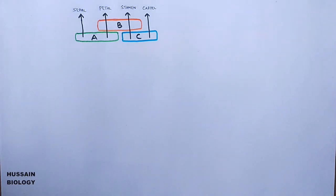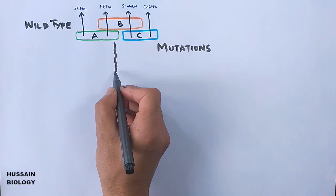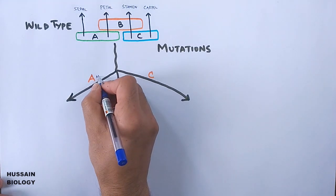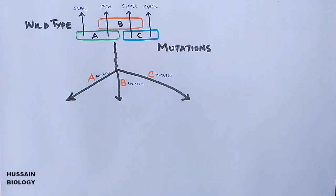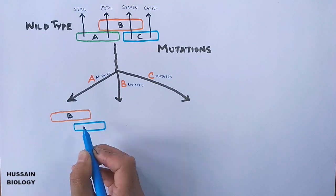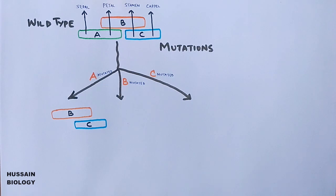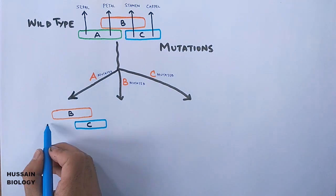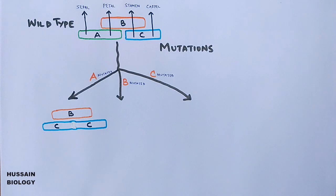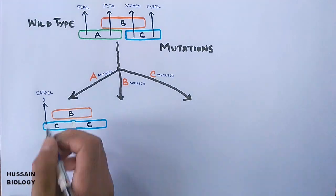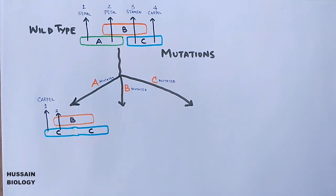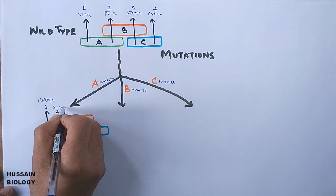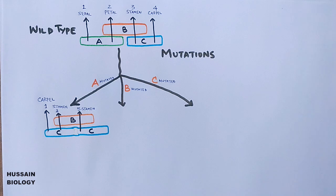Now let's examine mutation phenotypes. If A is mutated, B remains unchanged, but because A and C are mutually antagonistic, C is now expressed in place of A. This results in: whorl 1 develops as carpel (C alone); whorl 2 becomes stamen (B plus C instead of A plus B); whorl 3 remains stamen (B plus C); and whorl 4 remains carpel (C). So in an A gene mutation, the first and second whorls — which should have been sepal and petal — are replaced by carpel and stamen.